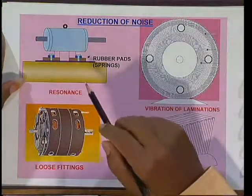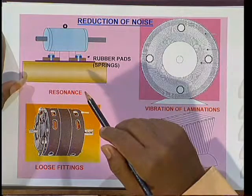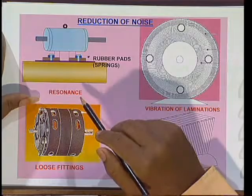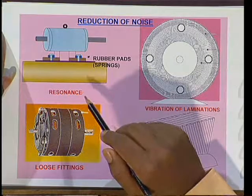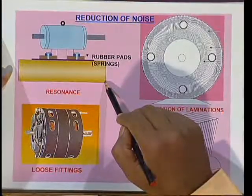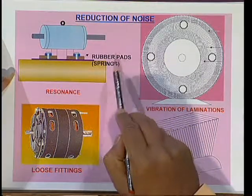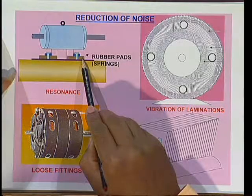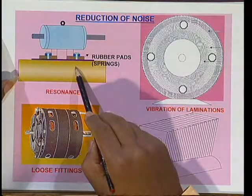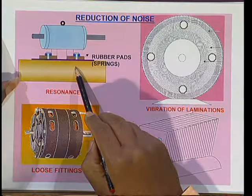Now let us see the conclusion: what are the main reasons for production of noise in a motor, and how we can reduce this noise. Noise may be due to resonance or mechanical vibrations. This can be avoided by using a flexible foundation — that means by providing rubber pads or springs at the bottom, you can reduce the mechanical vibrations. Noise may also be due to vibration of laminations.